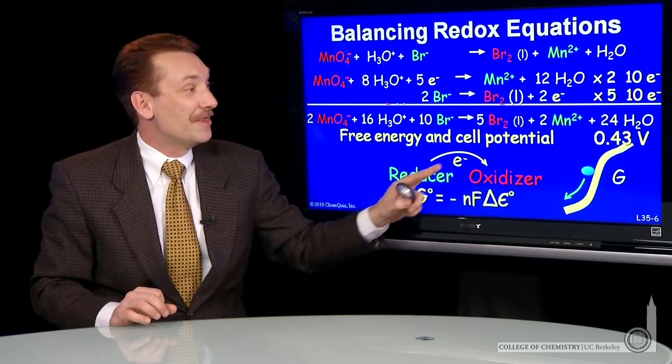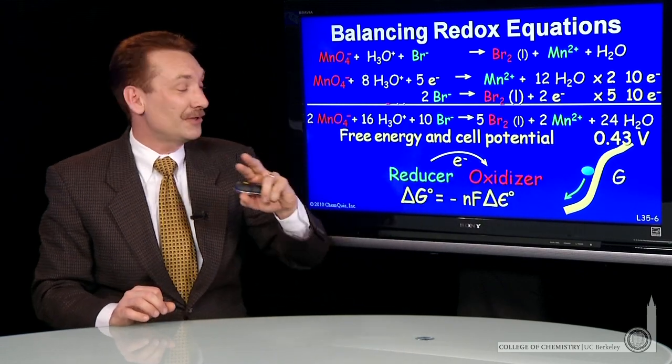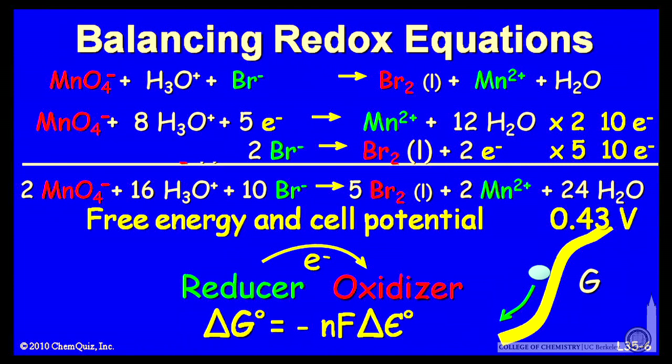And the relationship between the free energy and the cell potential is the standard state free energy is equal to minus n, the number of electrons in the transfer. In this case, we saw that it was a 10 electron transfer. Times Faraday's constant, the charge on a mole of electrons, times that standard cell potential.